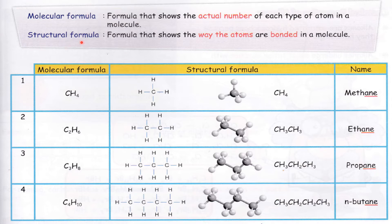In IGCSE they love to ask this kind of question — they sometimes ask you to differentiate between molecular and structural formula. If the question asks you about molecular formula, this is how you write it. Molecular formula is a formula that shows the actual number of each type of atom in a molecule. You simply write the number of carbons and hydrogens.